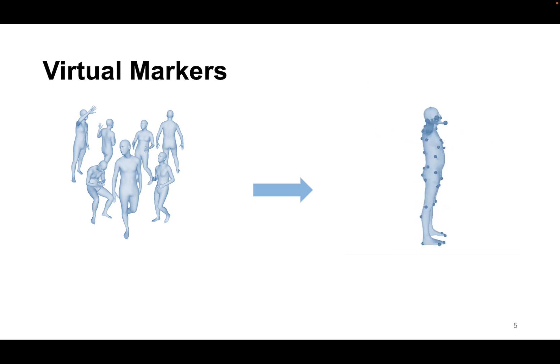We are inspired to think whether we can identify a set of landmarks on the mesh as virtual markers, for example elbow and wrist, that can be detected from wild images and allow us to recover accurate body shape.